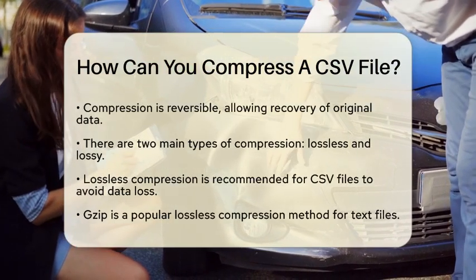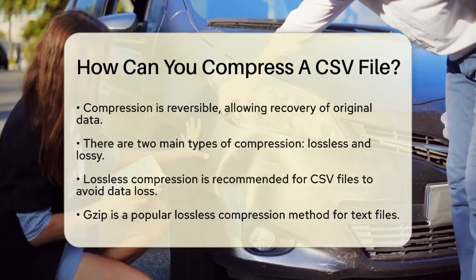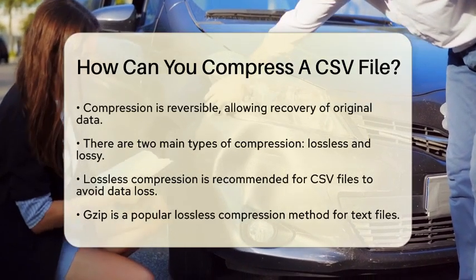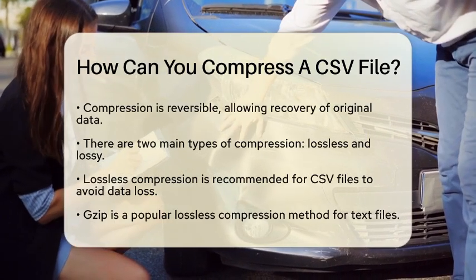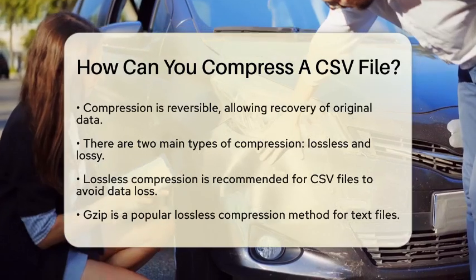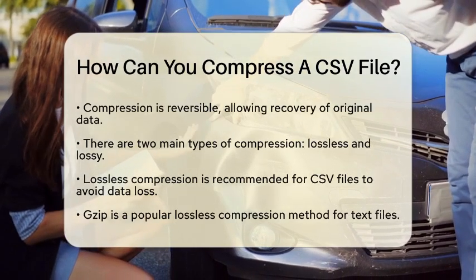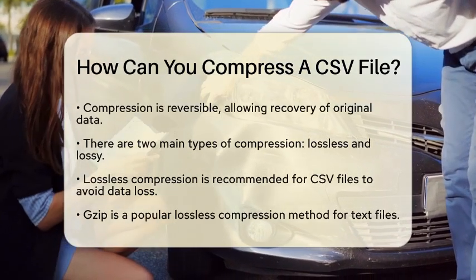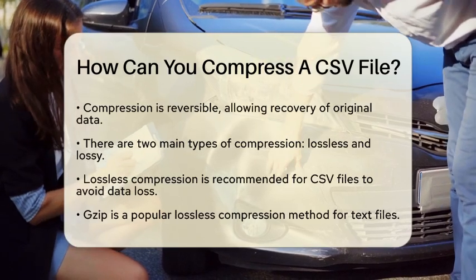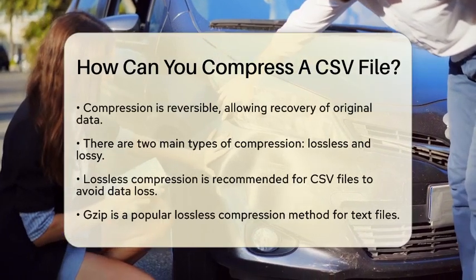One of the most common methods to compress CSV files is using gzip. Gzip is a widely supported lossless compression algorithm that works particularly well for text files. You can easily apply gzip compression using command-line tools or online services. For example, if you are using a Unix-based system, you can simply type gzip in the terminal and it will create a compressed file named filename.csv.gz.